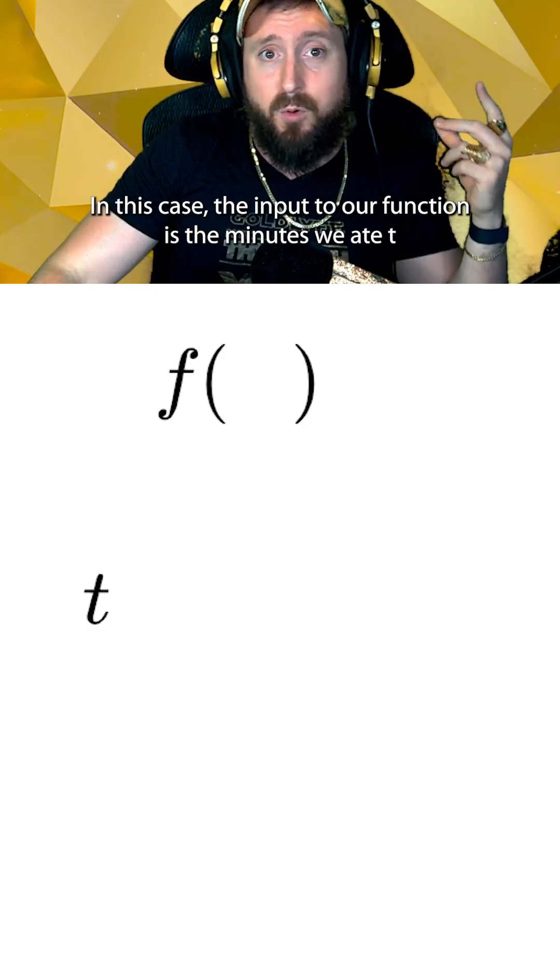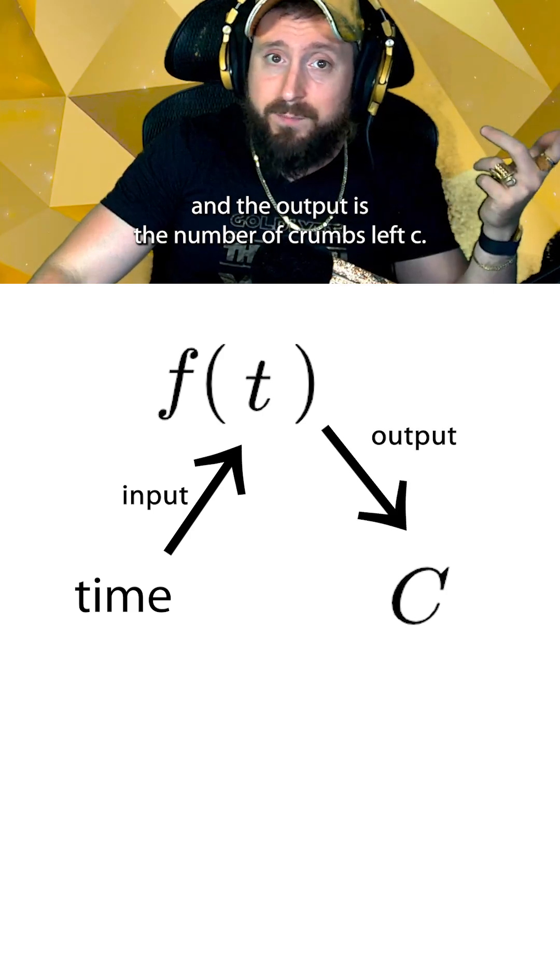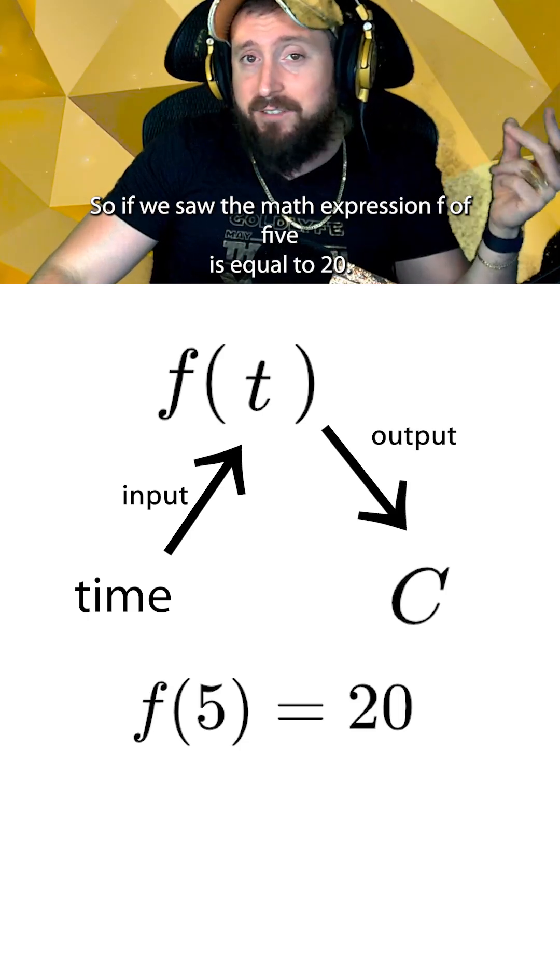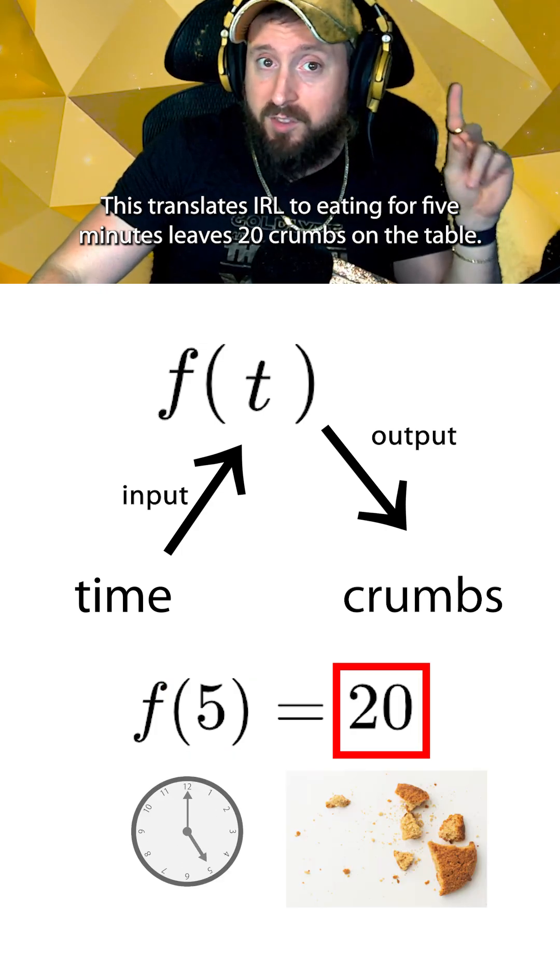In this case, the input to our function is the minutes we ate, t, and the output is the number of crumbs left, c. So if we saw the math expression f of 5 is equal to 20, this translates IRL to eating for 5 minutes leaves 20 crumbs on the table.